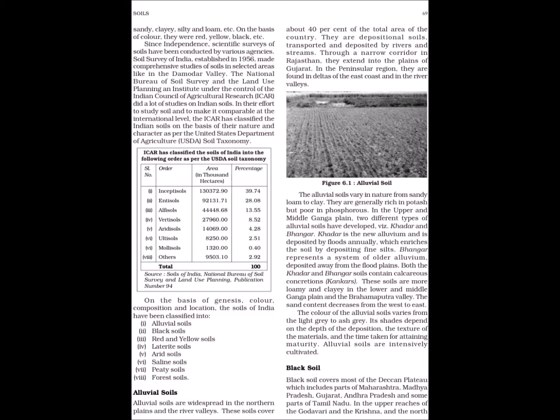ICAR has classified the soils of India into the following order as per the USDA soil taxonomy: Inceptisol 39.74%, Entisol 28.08%, Alfisol 13.55%, Vertisol 8.52%, Aridisol 4.28%, Ultisol 2.51%, Mollisols 0.40%, Others 2.92%.